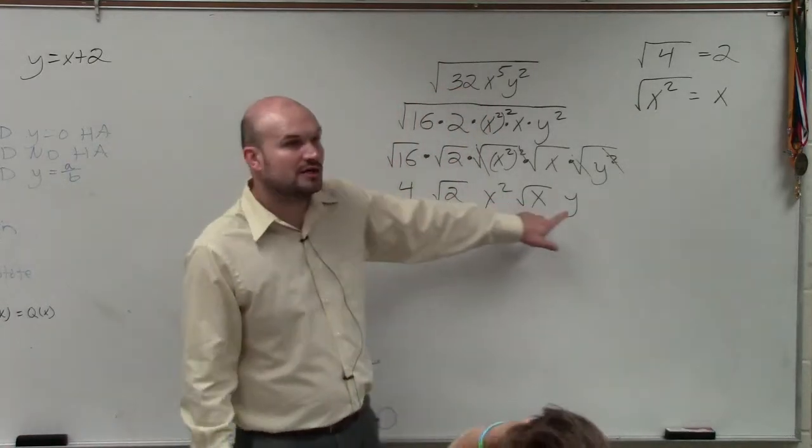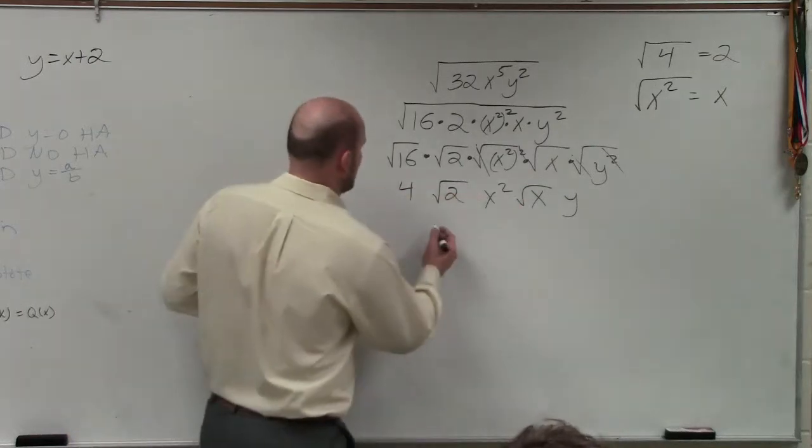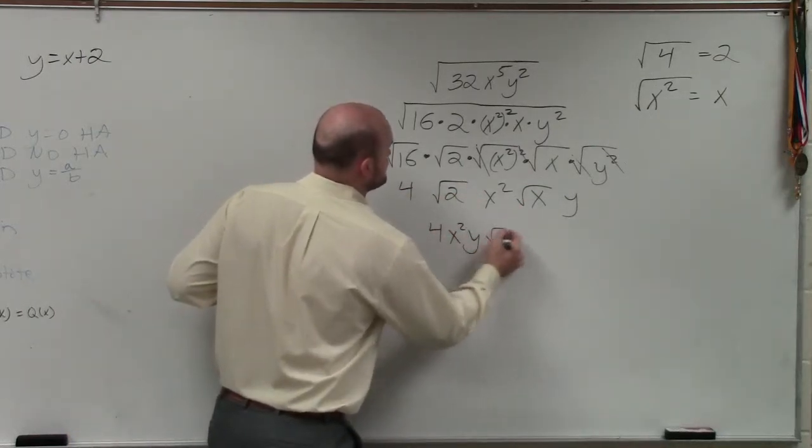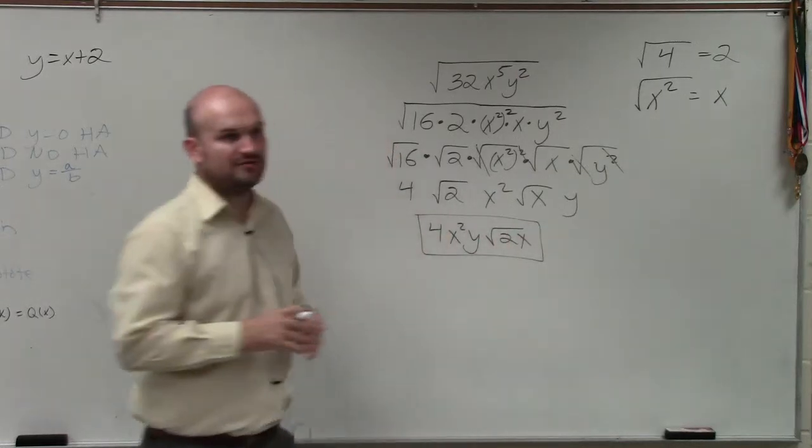So therefore, everything that's under the radicand is still going to remain under the radicand. And everything that's out is now out. So I have 4x squared y times the square root of 2x. And that would have been your final answer.